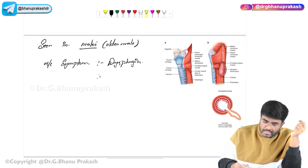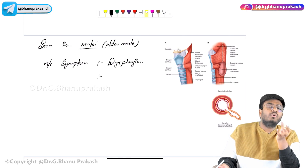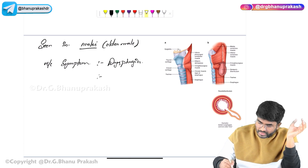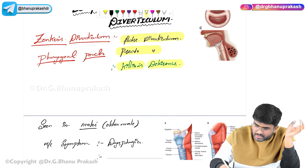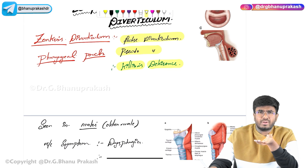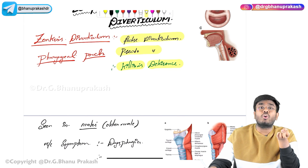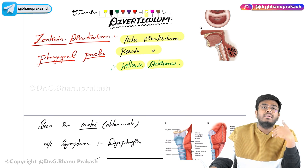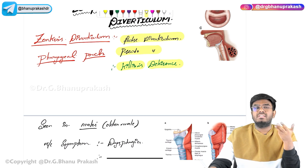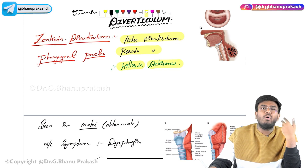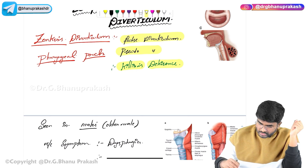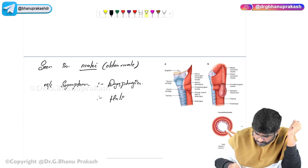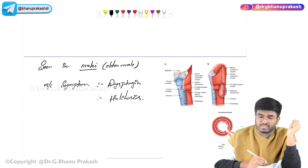Dysphagia will be seen. Also, food materials will go and get stored in this pouch. Some food particles will lodge in this pharyngeal pouch, and proper digestion will not happen — they will undergo rotting. Because of that, whenever you talk with these patients, there will be foul breath — halitosis — because the food is getting rotten in this pharyngeal pouch.